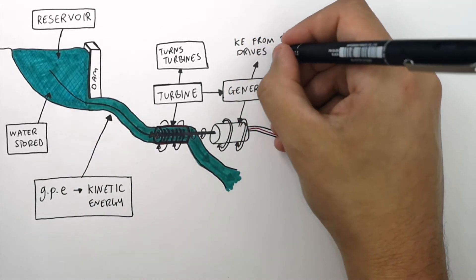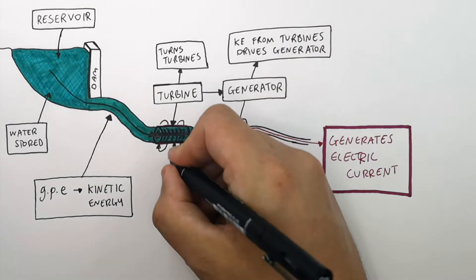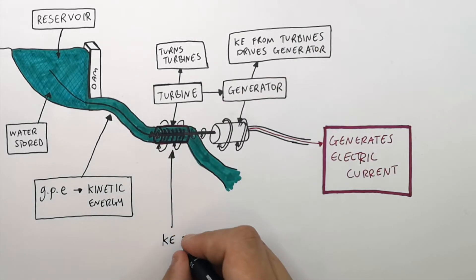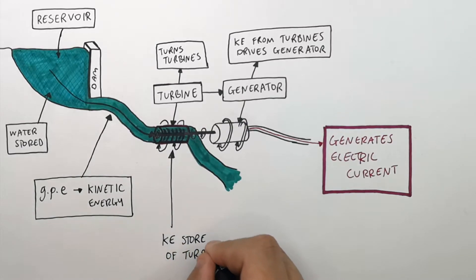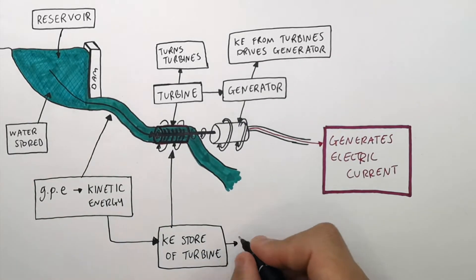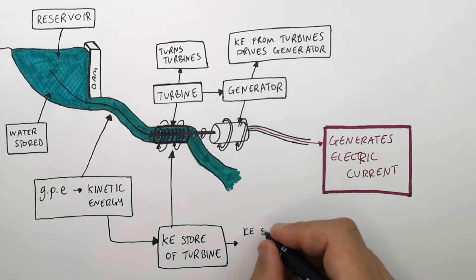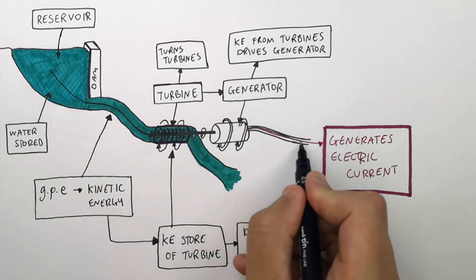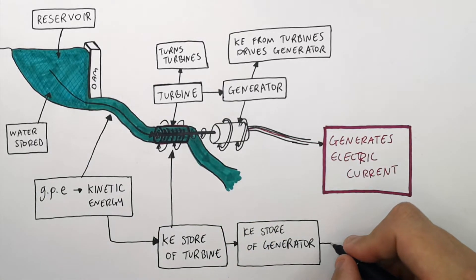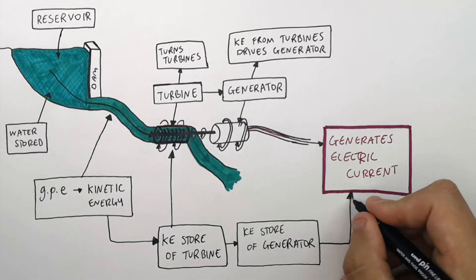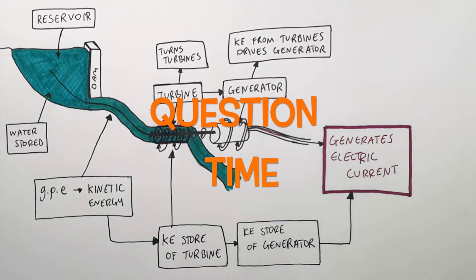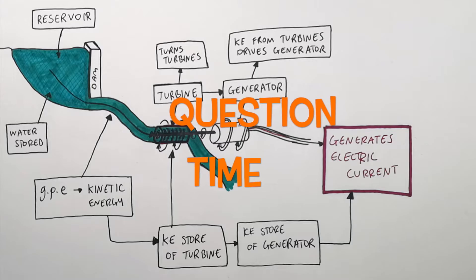The kinetic energy store of the water is transferred to the kinetic energy store of the turbine, which is then transferred to the kinetic energy store of the generator, which then generates an electric current. It's question time — attempt these questions to check your understanding.